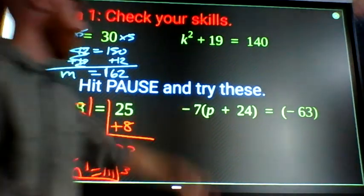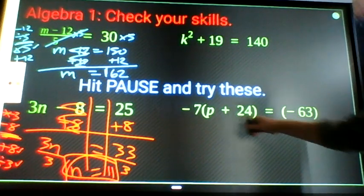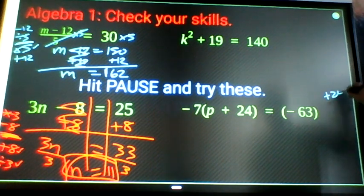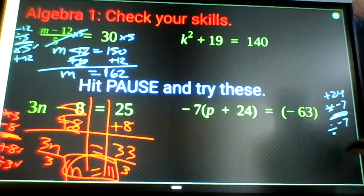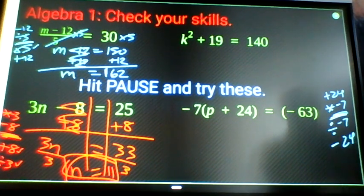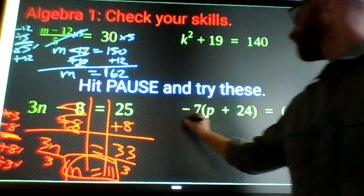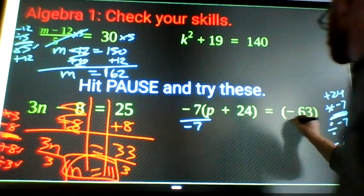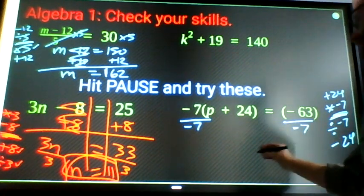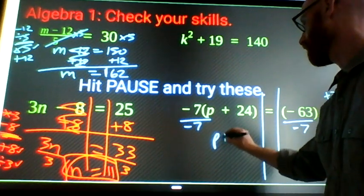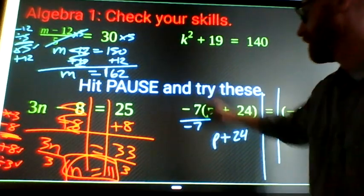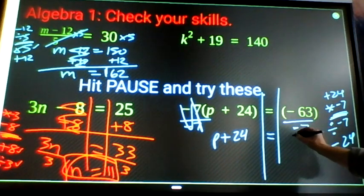This guy over here: what happens to p? Plus 24, then times negative 7. What am I going to do? Divide by negative 7, then subtract 24. Divide by negative 7 both sides: p plus 24, because these cancel, equals 9.